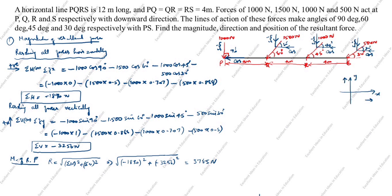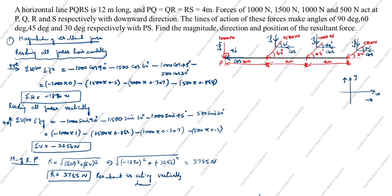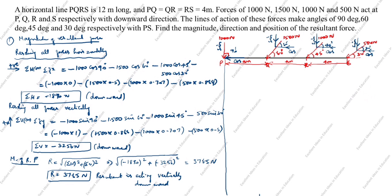R = 3765 N. Since both ΣH and ΣV are negative, the resultant acts downward. The resultant force acts vertically downward in the third quadrant direction. Next, we will find the direction of the resultant force.